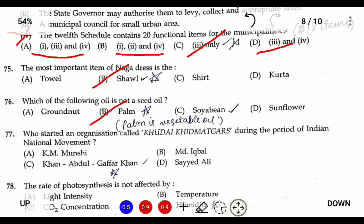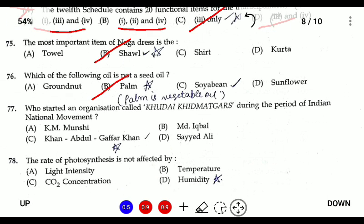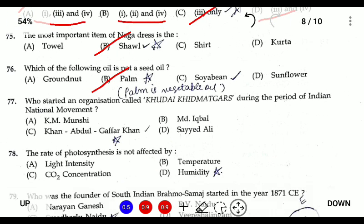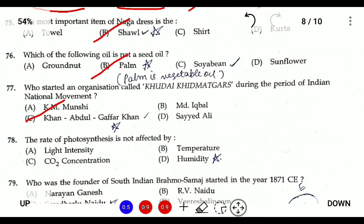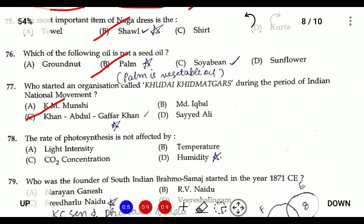Question seventy-seven: who started the organization Khudai Khidmatgar? It was started by Khan Abdul Ghaffar Khan in Peshawar during the Civil Disobedience Movement. He was also known as the Frontier Gandhi.